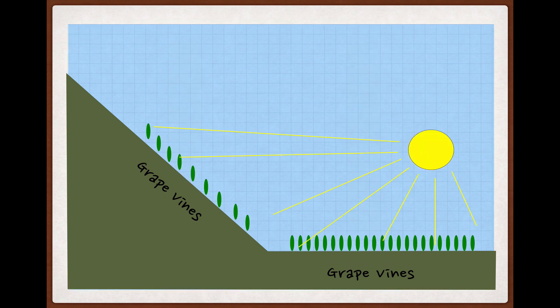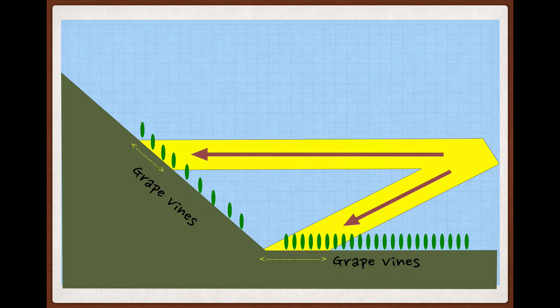But if we fast forward to the end of the growing season, when the sun is lower in the sky, a different picture emerges, again exaggerated for simplicity, with the vineyards on the flat ground getting more diffuse radiant energy than the vineyards on the slope, where the radiance is more concentrated.